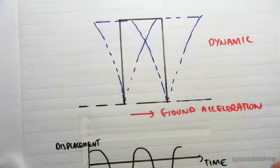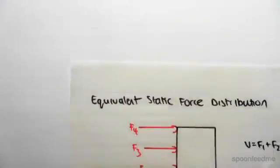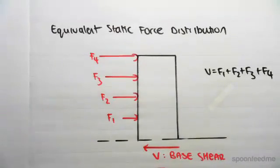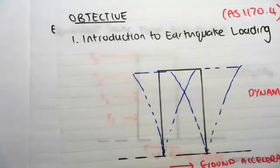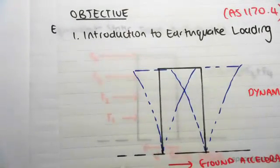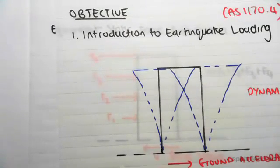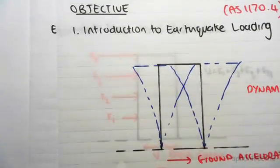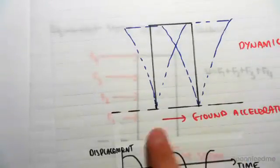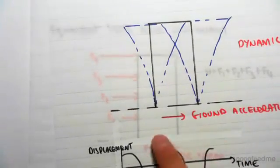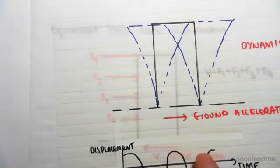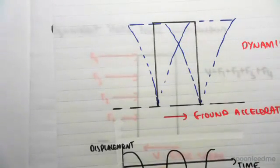So what the code does is it gives us this thing called the Equivalent Static Force Distribution. The first thing we're going to be doing is based on properties of this structure, like its importance level, how important the building is. If it's a nuclear reactor, it's very important, or if it's just some type of barn on some farm, it's not that important. So based on things like how important it is, where it is, based on its location in Australia, and also the ground conditions, that's important for the earthquake. All these different factors are going to allow us to work out something called the Earthquake Design Category.